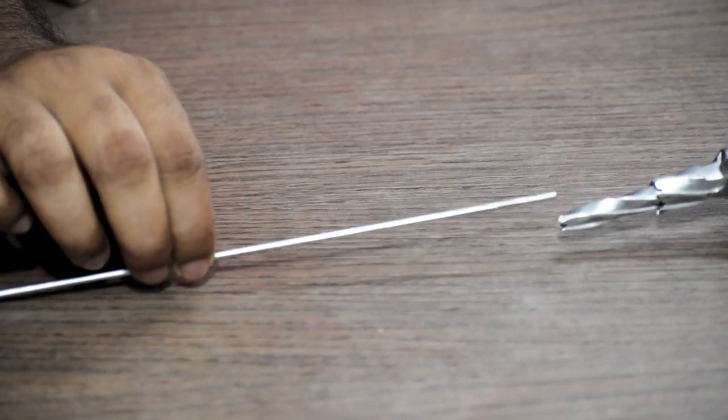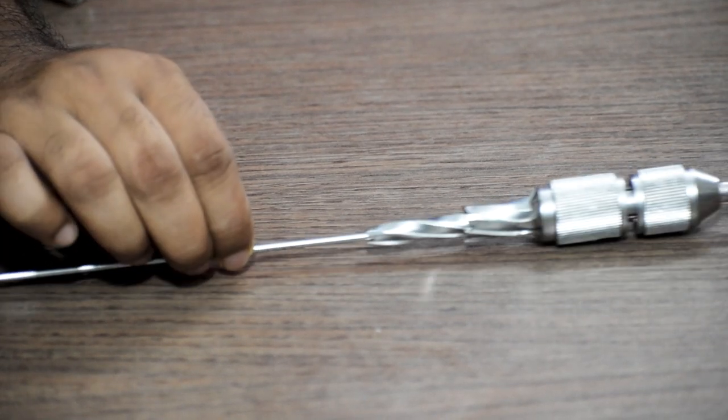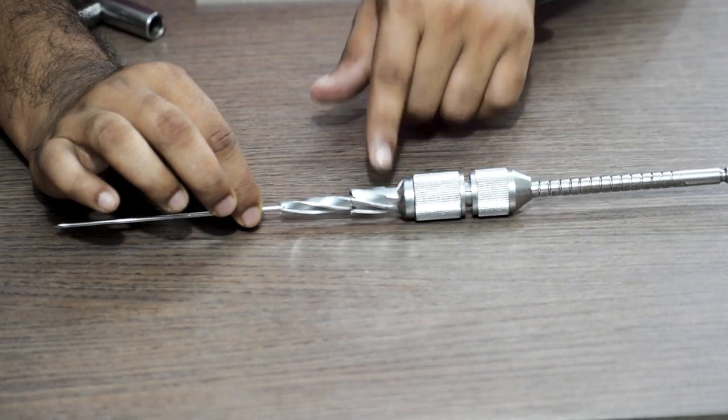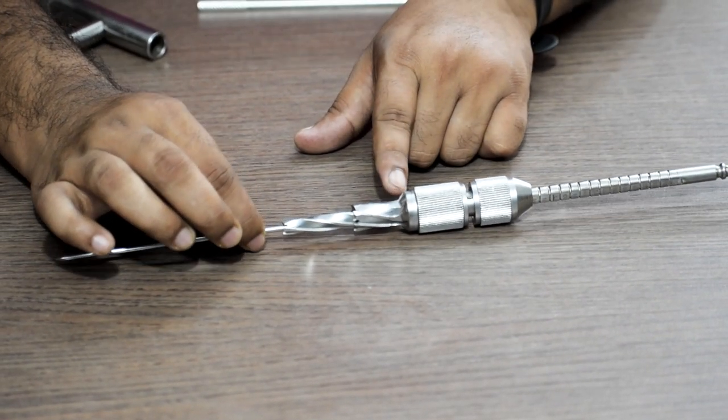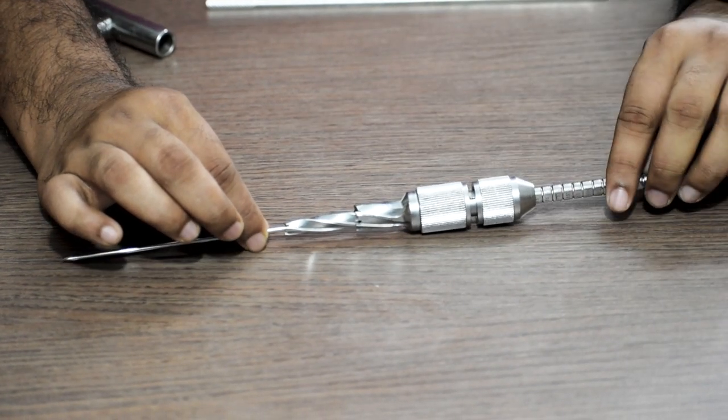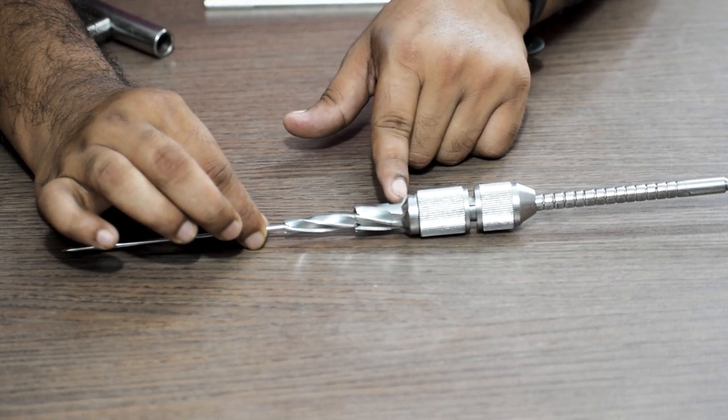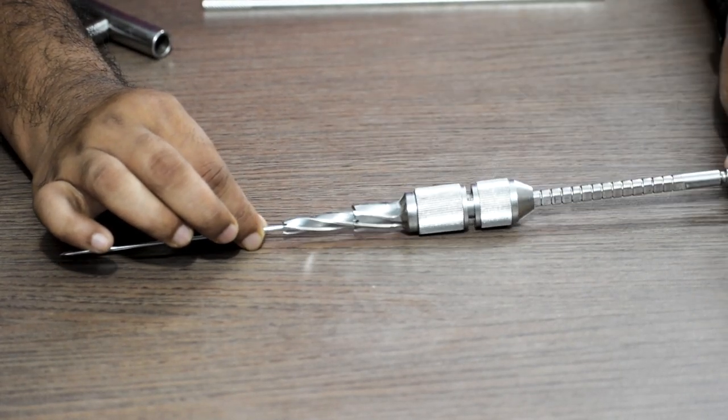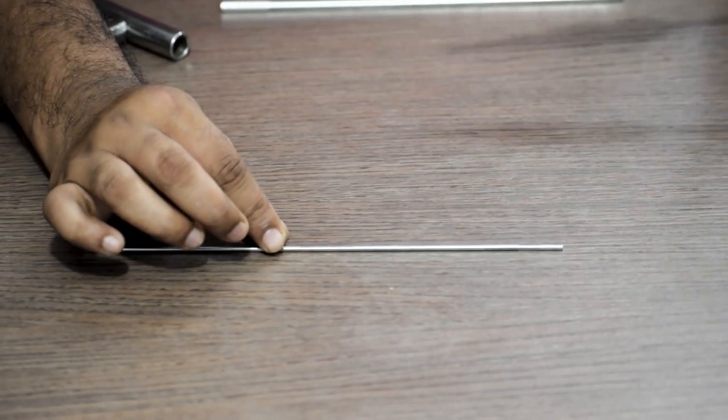Once done, then we lock it and use it to ream through. This part will touch the cortex of the bone. We will ream till this part touches the outer cortex of the bone, and then we take the reamer out.